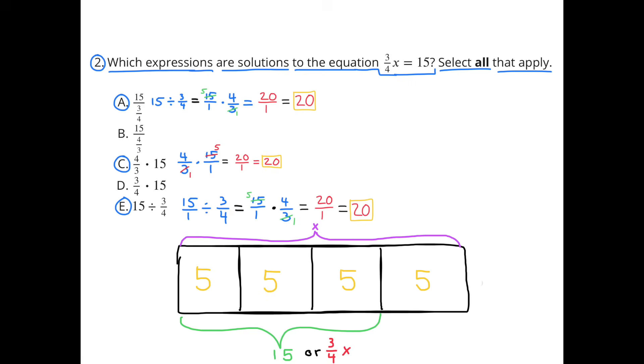I selected C because 4 thirds times 15 is the same as 15 times 4 thirds. And if you notice on A and E, when we divide by 4 thirds, it's the same as multiplying by its reciprocal, which is multiplying by 4 thirds, which is what we did for C.